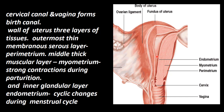The innermost layer, which covers the uterine cavity, is glandular and is called the endometrium. In the endometrium, cyclical changes happen continuously during every menstrual cycle. This concludes our discussion about the uterus today. Thank you, students — we will meet again.